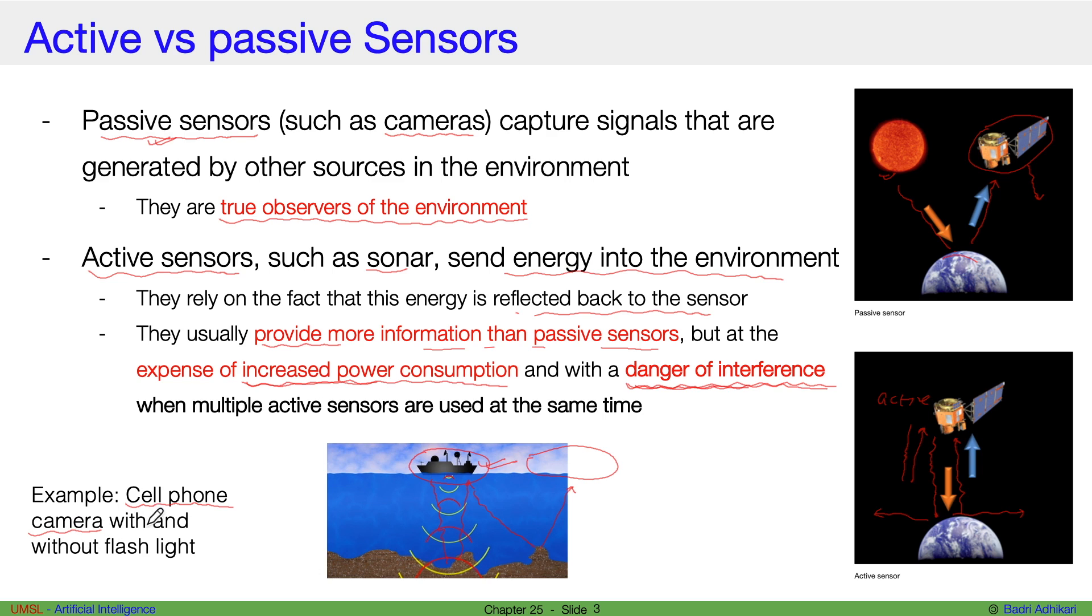If I take a picture from the camera without using the flashlight, then this becomes an example of a passive sensor. Whereas, if I use the flashlight and I'm relying on the flashlight to collect the environment images, then that becomes an example of active sensor.